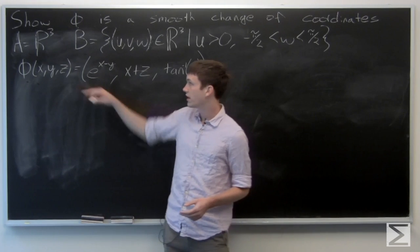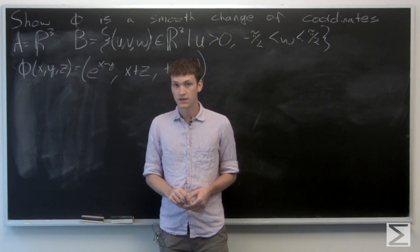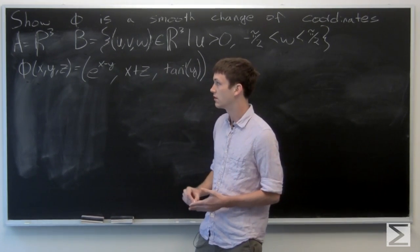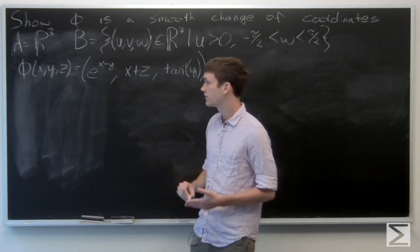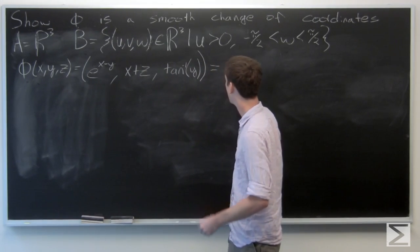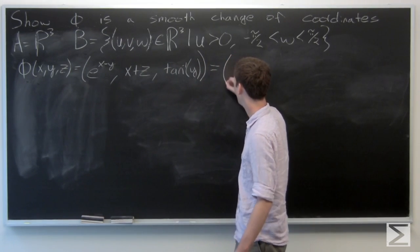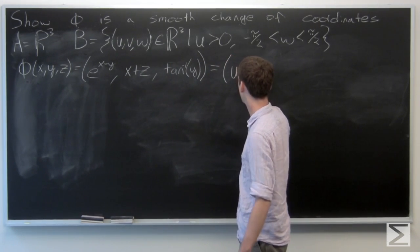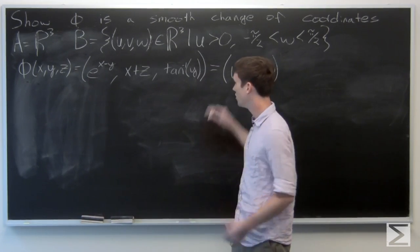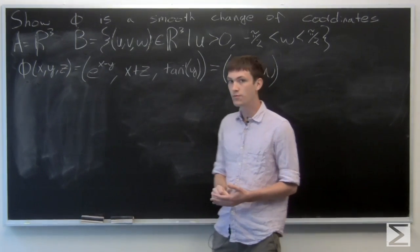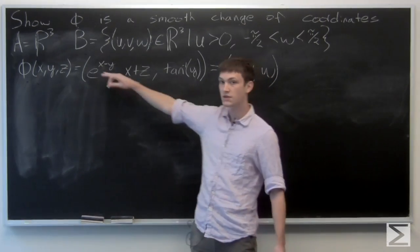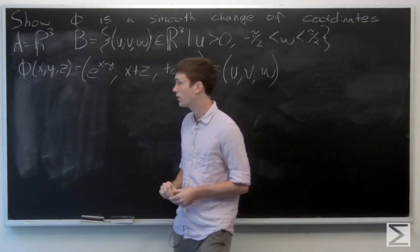We want to show that phi is a smooth change of coordinates, so we're going to do that by producing an inverse function. We'll let this function take some u, v, w, and we're going to solve explicitly for x, y, and z.